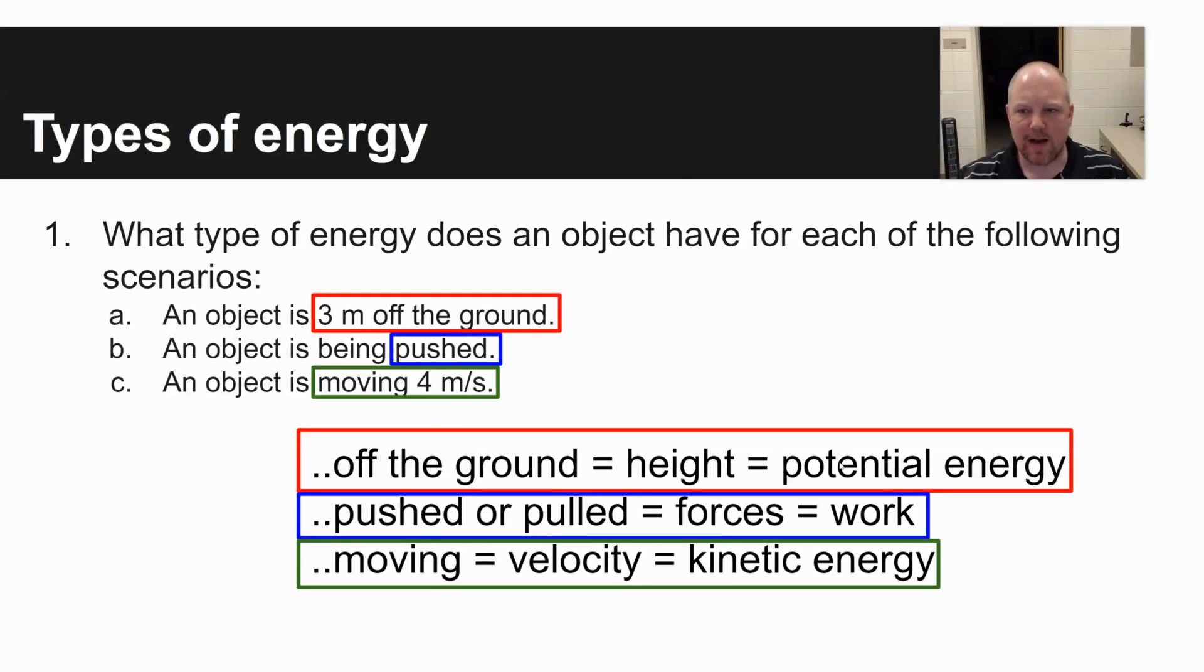Question number one, what type of energy does an object have for each of the following scenarios? For scenario A, an object is three meters off the ground. What I think the first question I'd ask myself, if you're trying to figure out what type of energy you have, is something off the ground? If yes, it has potential energy.